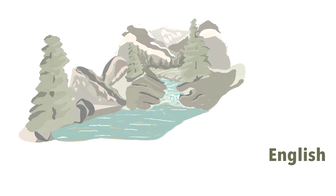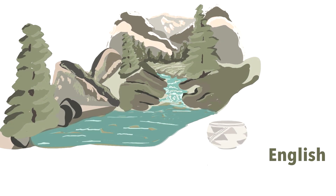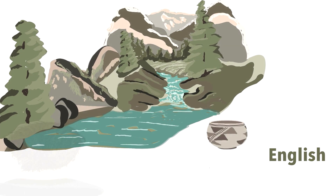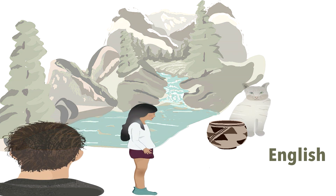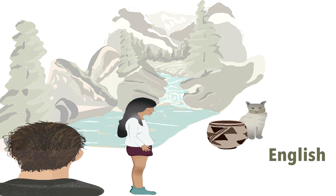As English speakers, if we put ourselves in the shoes of the girl in this scenario, and someone asks us, where is the cat? We would almost certainly say something like: the cat is behind the clay pot.